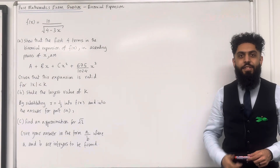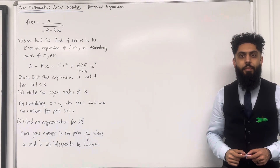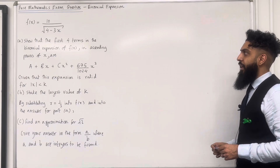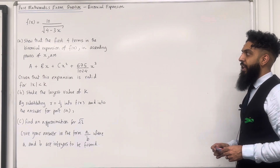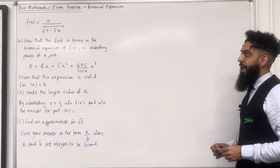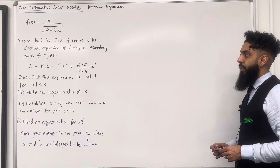Welcome back. In this teaching video I'll be looking at a Pure Mathematics exam question on binomial expansion. Here is the exam question. f(x) is equal to 10 over the square root of 4 minus 3x. Part A: show that the first four terms in the binomial expansion of f(x) in ascending powers of x are a plus bx plus cx squared plus 675 over 1024 x cubed.